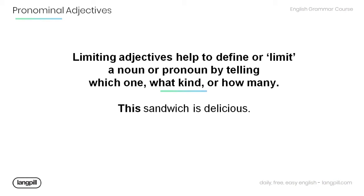Limiting adjectives help to define or limit a noun or pronoun by telling which one, what kind, or how many. For example: 'This sandwich is delicious.' Here, 'this' is a limiting adjective that defines the noun 'sandwich' — it tells us which sandwich is delicious.